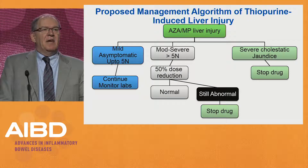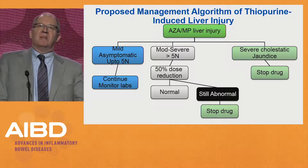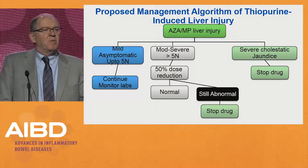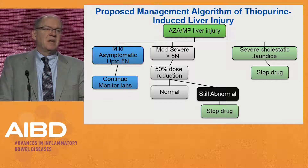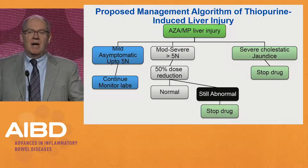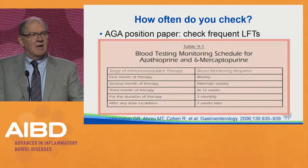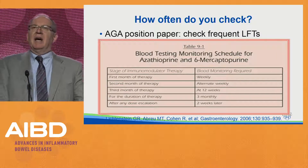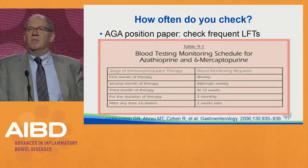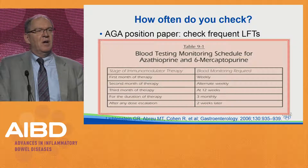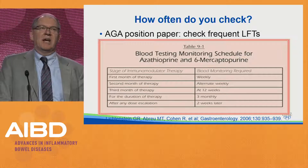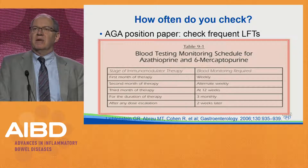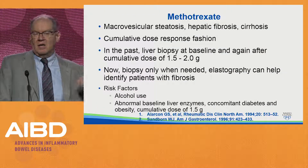In patients where transaminases are at a relatively low level, you can probably continue to monitor them, but if they're persistently elevated you probably need to dose reduce, and in rare cases you may have to discontinue the drug altogether. The AGA guidelines on immunomodulators published about 10 years ago don't specify precisely — they say to check frequent LFTs. In my own practice I check LFTs every three months and make adjustments accordingly.